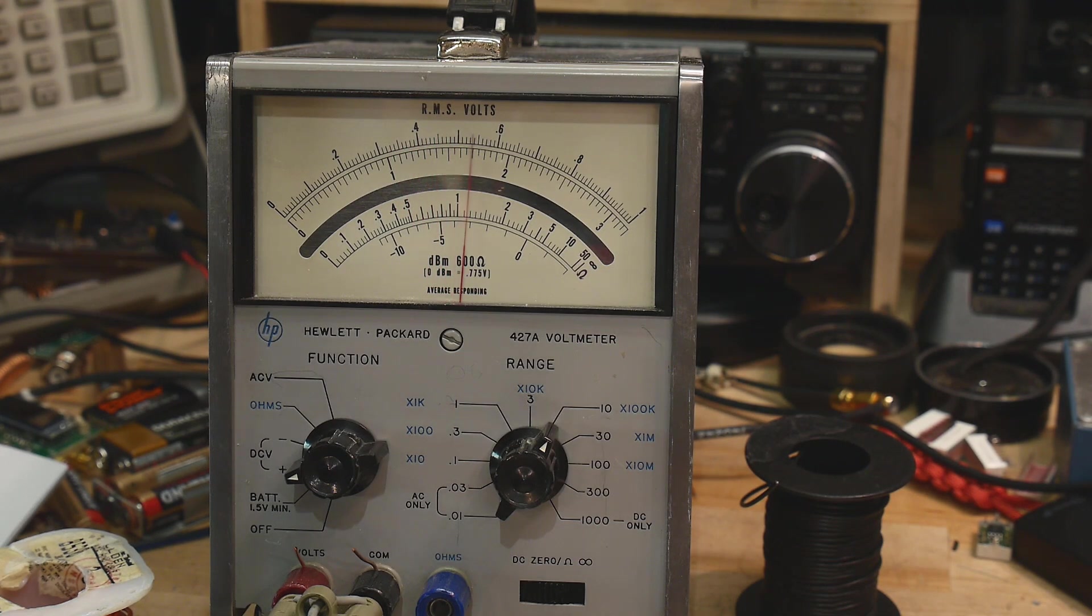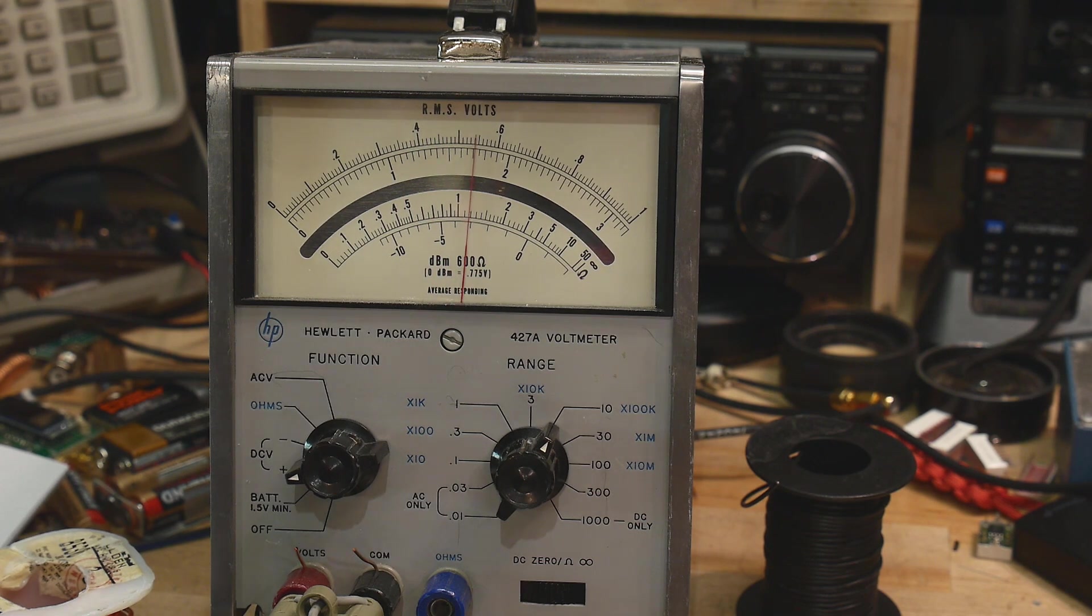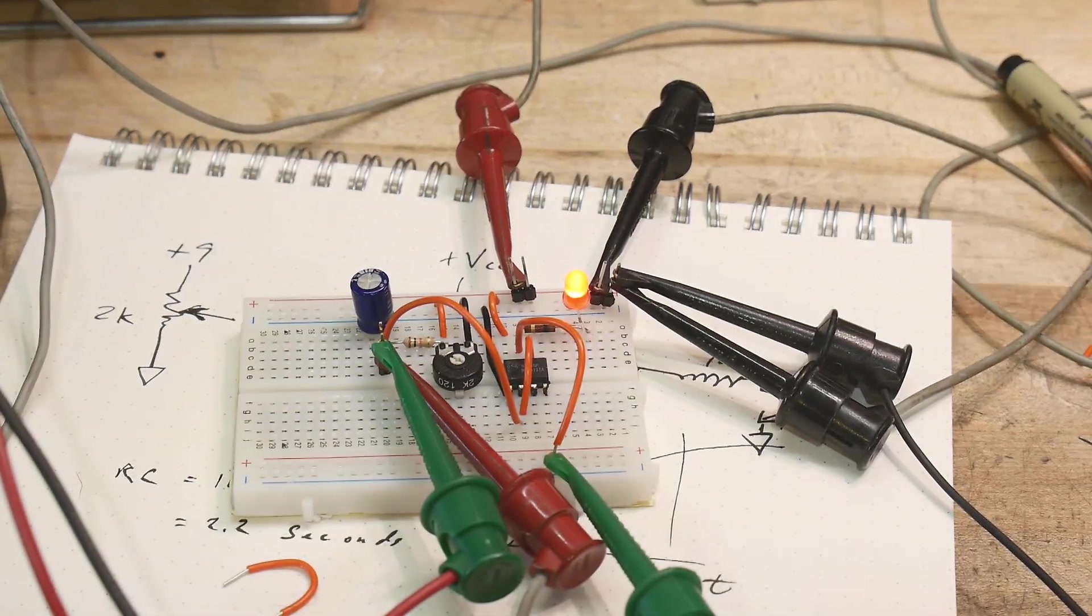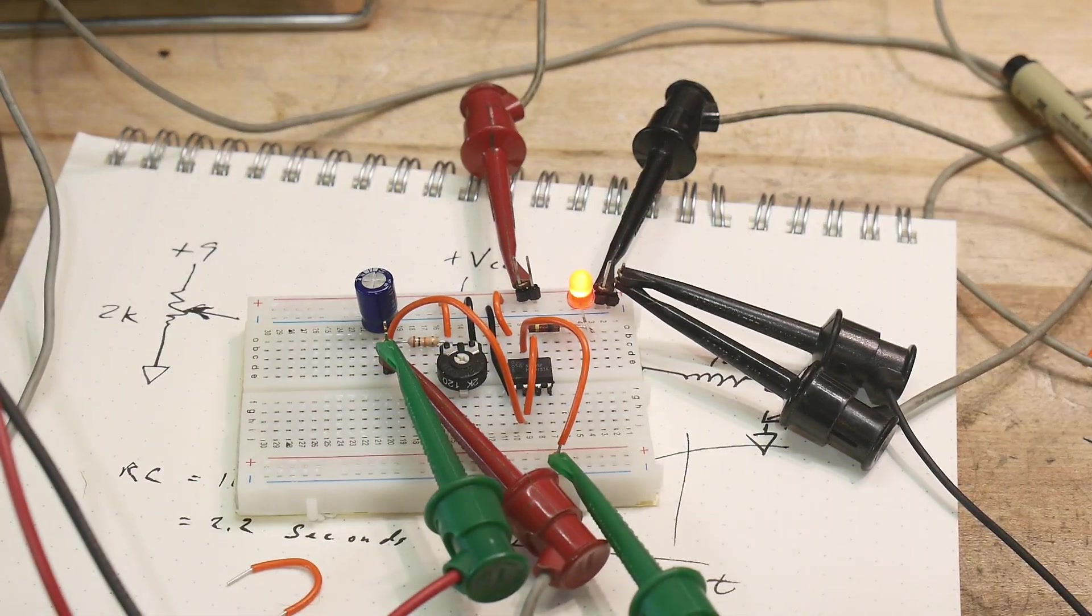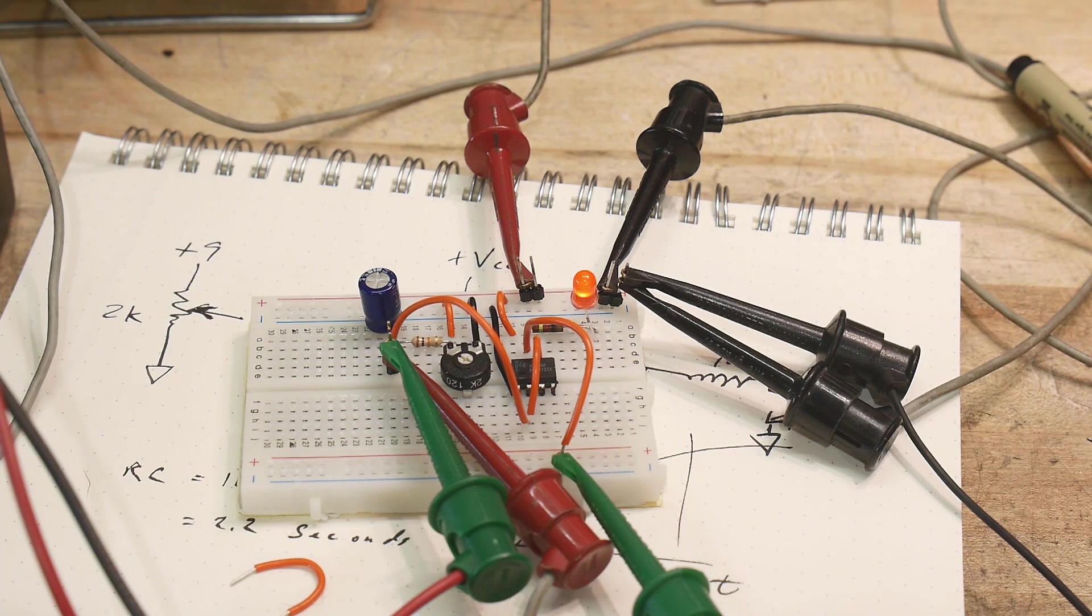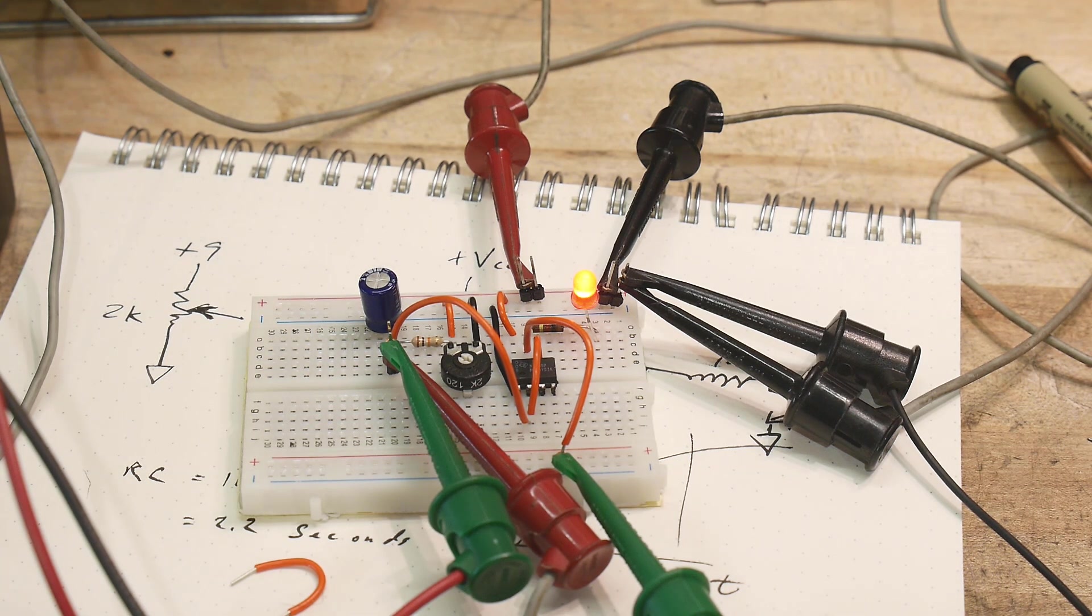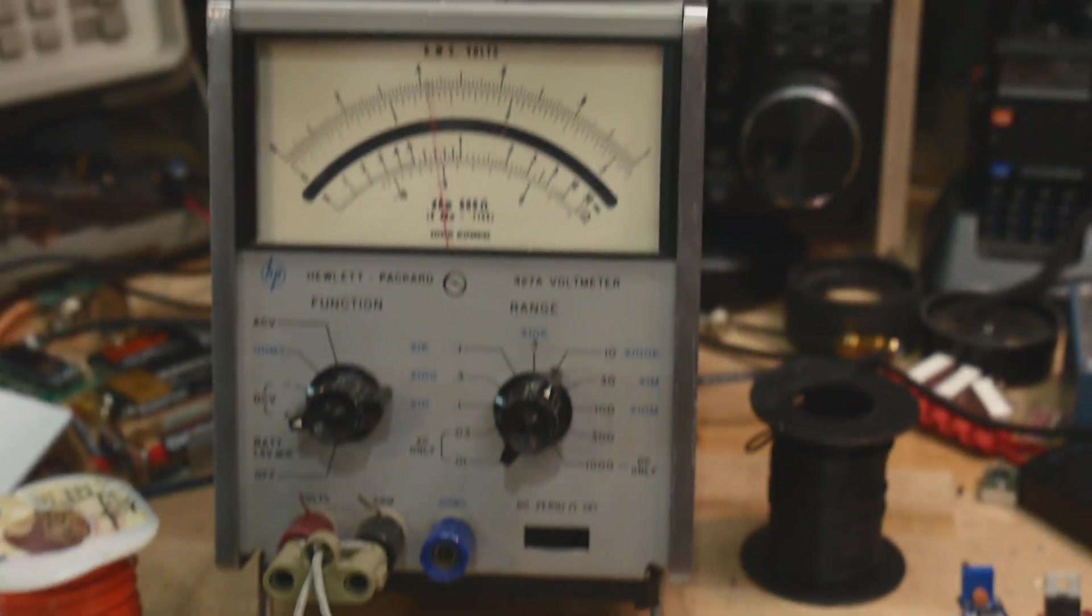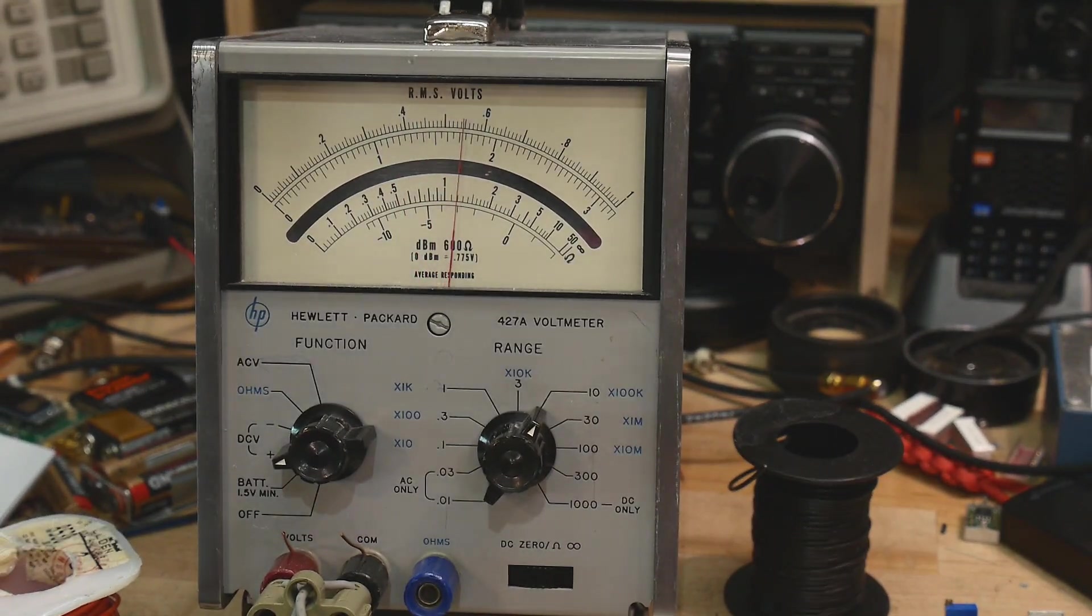We're charging up, and then that transistor turns on, and it starts bleeding that capacitor. And then it lets go, and then we start charging up again. So there's our 555 going very slowly. Down, then up, and down, then up. And we can watch the LED. It should be about a 2.2 second LED. And down is about one second, and then up it's about two seconds.